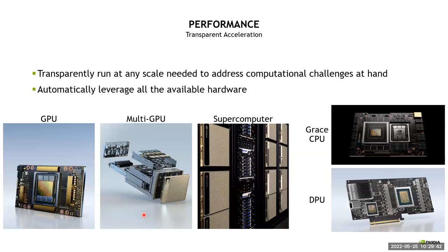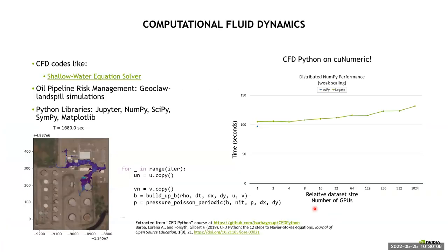But even this code can be scaled up to a supercomputer using koonumeric. So we need to provide you with high degree of performance. And we really want to provide a transparent way of doing that. So run at any scale, regardless of what hardware you have, whether it's one GPU, or several GPUs, or even a whole supercomputer. So to give you an idea, here is a simple CFD application that was written for the CFD Python course by Lorena Barba's group.